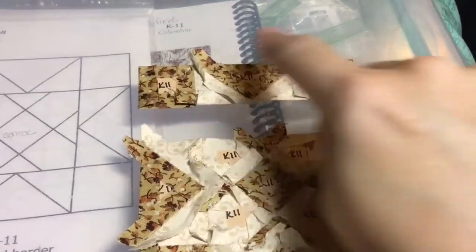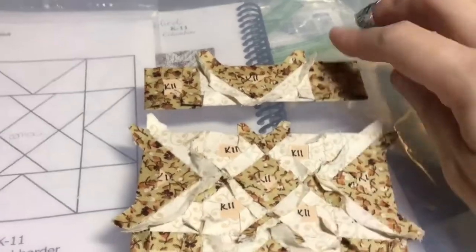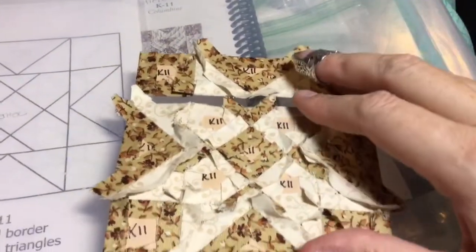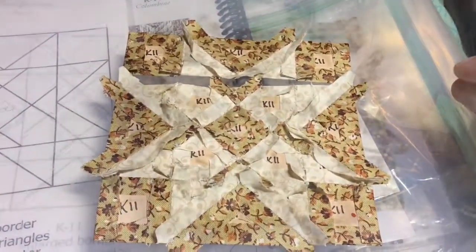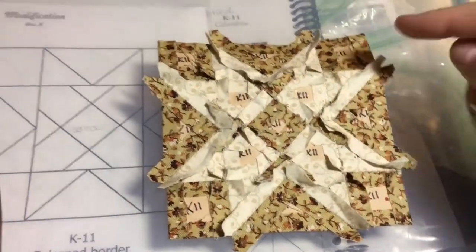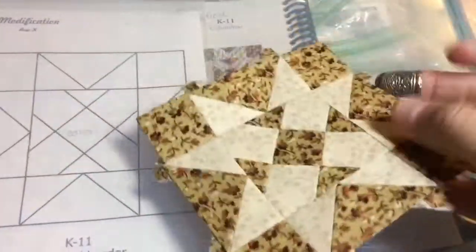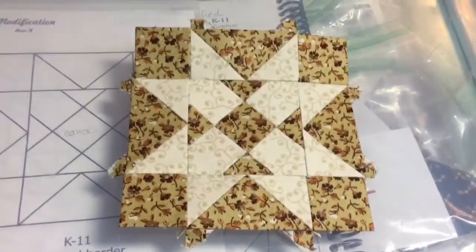So now I've got my top row all connected and just to connect it to the rest of my block. So I've attached my top row to my middle section and now I have a completed K-11 block.